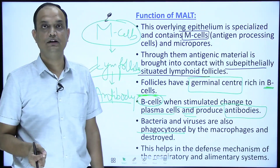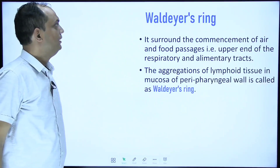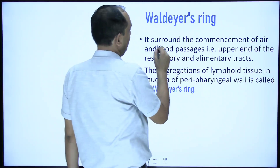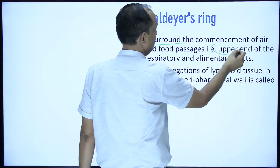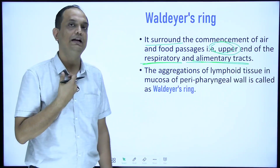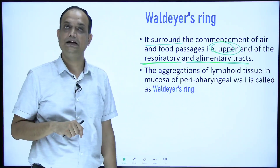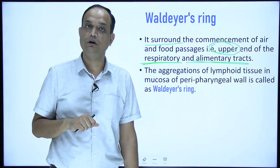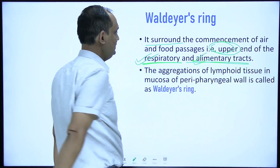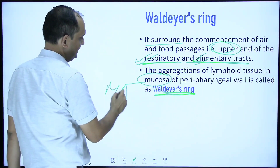Whenever you are writing the function of the Waldeyer ring, this is the function because Waldeyer ring is also Mucosa Associated Lymphoid Tissue. Waldeyer's ring surrounds the commencement of the air and food pipe - that is the upper end of your respiratory tract and alimentary tract. In the posterior wall of the pharynx you have a nasopharyngeal tonsil, on the lateral wall of the oropharynx the palatine tonsil, and on the posterior wall of the tongue the lingual tonsil. These aggregations of lymphoid tissue in the mucosa are known as Waldeyer's ring.